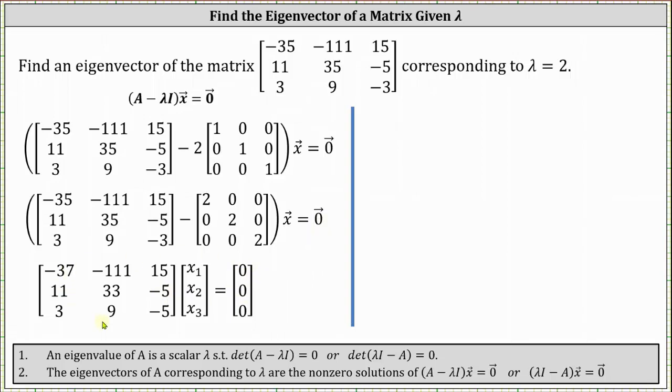We'll solve the system by writing an augmented matrix and converting it to reduced row echelon form. Here is the corresponding augmented matrix, and here it is in reduced row echelon form.